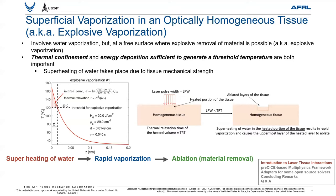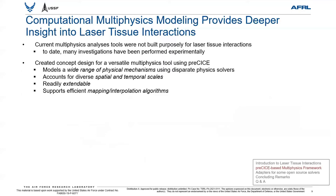What's happening here is that superheating of water takes place, leading to rapid vaporization that causes the uppermost layers of the heated tissue to ablate. The threshold temperature we are discussing is highly variable and obviously dependent upon the mechanical strength of the tissue. Laser tissue interaction modeling requires a wide range of physics capabilities, including light transport, heat transport, tissue damage, fluid dynamics, mechanical damage, and molecular dynamics. You want a versatile multiphysics tool that incorporates all of this physics. However, tools currently available in literature are not built especially for laser tissue interactions, and many investigations in this area have been performed experimentally. Keeping this in mind, we developed and prototyped a versatile multiphysics framework using PreSize.